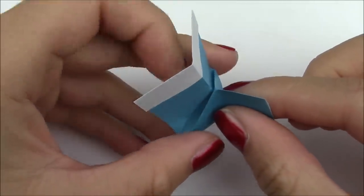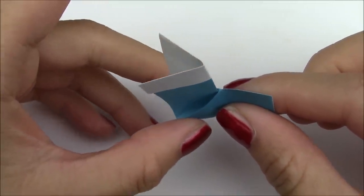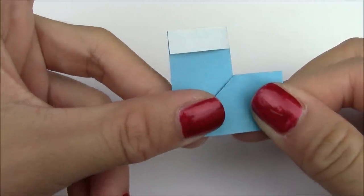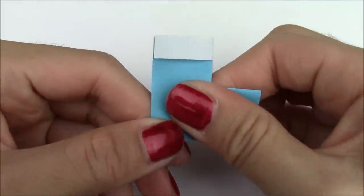Then after that you just want to fold the entire thing in half on the left side. So just fold it down like this. Fold it down and flatten.